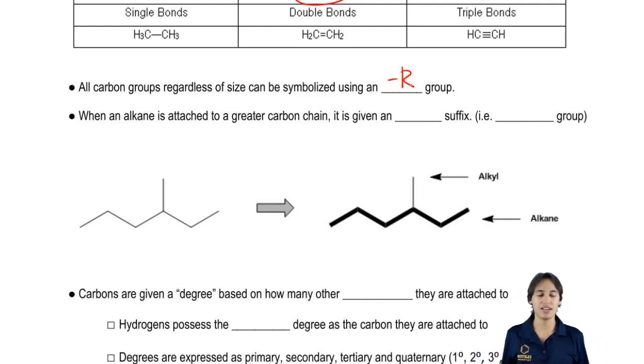When an alkane is attached to a greater carbon chain, it's given a YL suffix. So what that means is that an alkane, if it's a branch off of a bigger chain, it actually becomes an alkyl.